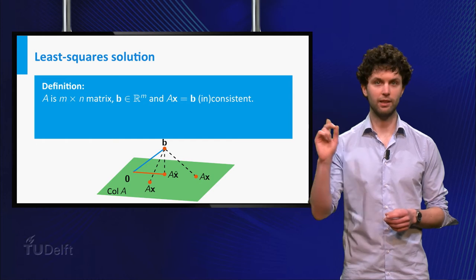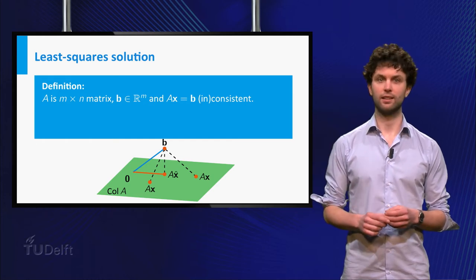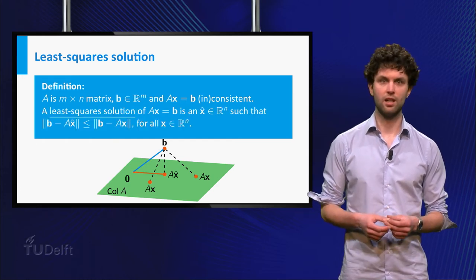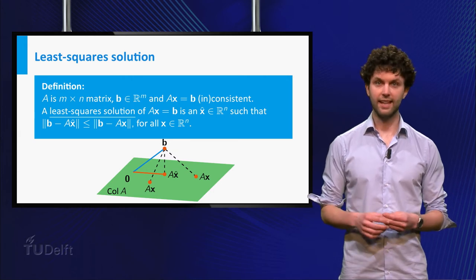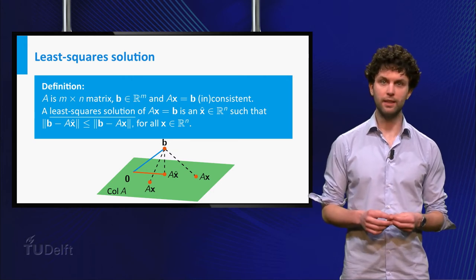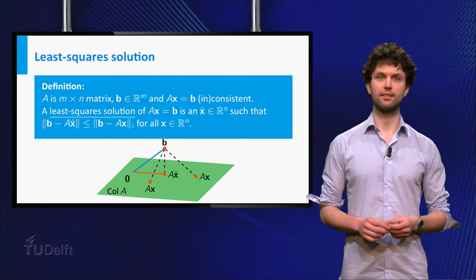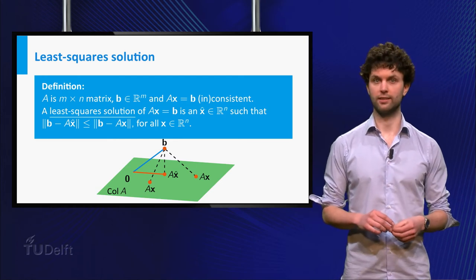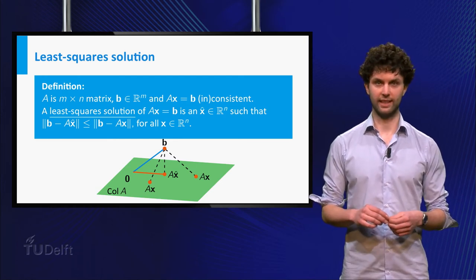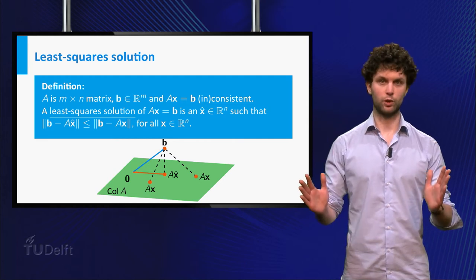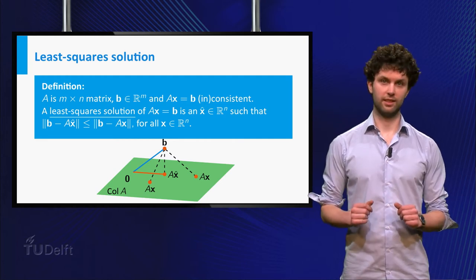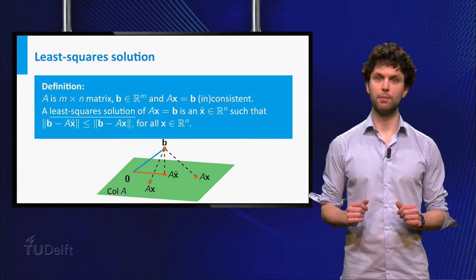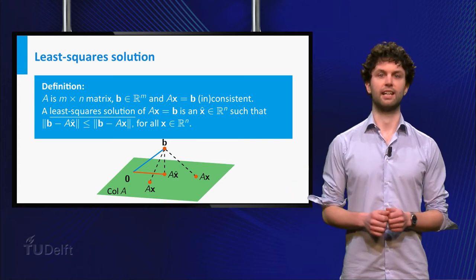This is a very important idea. And here is the formal definition. A least-square solution x-hat of the system Ax is b is a vector x-hat which satisfies the inequality that the distance between A times x-hat and b is smaller than or equal to the distance between A times x and b for all x in Rm.